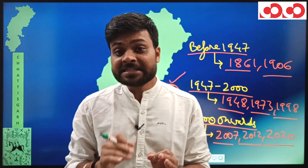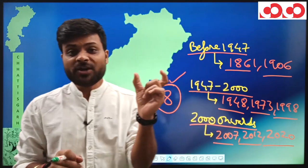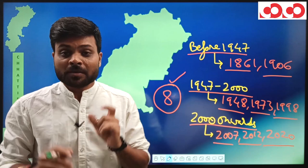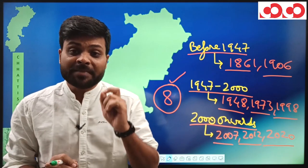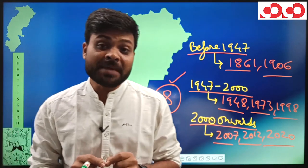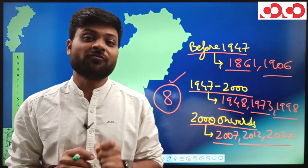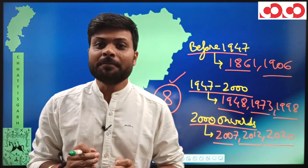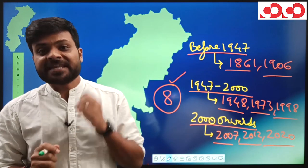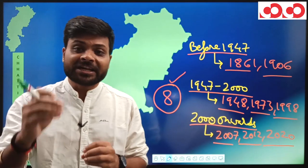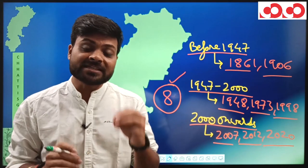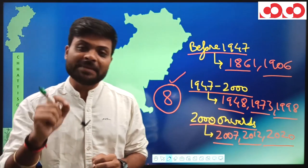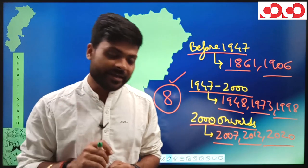One more thing to note: Chhattisgarh has 28 districts total and 8 phases. This means many phases involved the formation of multiple districts simultaneously. We will study this entire topic in map form so it is easy to memorize. You can also practice at home using maps.